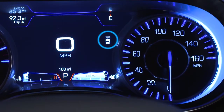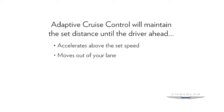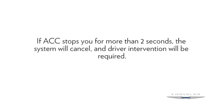You'll see the sensed vehicle indicator icon in the instrument cluster. The system will maintain the set distance until the driver ahead accelerates above the set speed, moves out of your lane, or until the system is manually disengaged. Now if the driver in front of you stops, ACC will maintain your set distance and bring you to a standstill as well. If that driver starts moving again within two seconds, you'll resume motion without the need for driver interaction. If ACC stops you for more than two seconds, the system will cancel and driver intervention will be required.